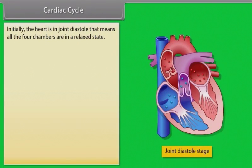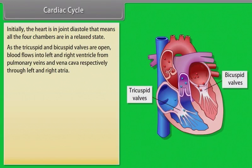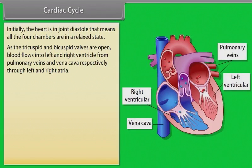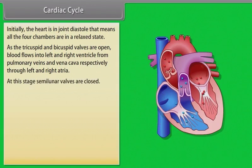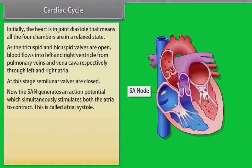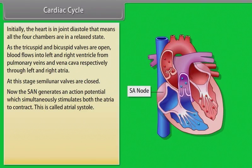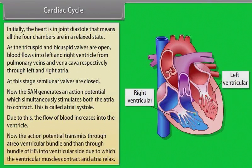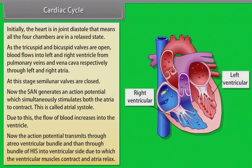Initially, the heart is in joint diastole — all four chambers are in a relaxed state. With tricuspid and bicuspid valves open, blood flows into the left and right ventricles from pulmonary veins and vena cava respectively, while semilunar valves are closed. The SA node then generates an action potential, simultaneously stimulating both atria to contract — this is called atrial systole — increasing blood flow into the ventricles. The action potential then transmits through the AV bundle and bundle of HIS into the ventricular side.